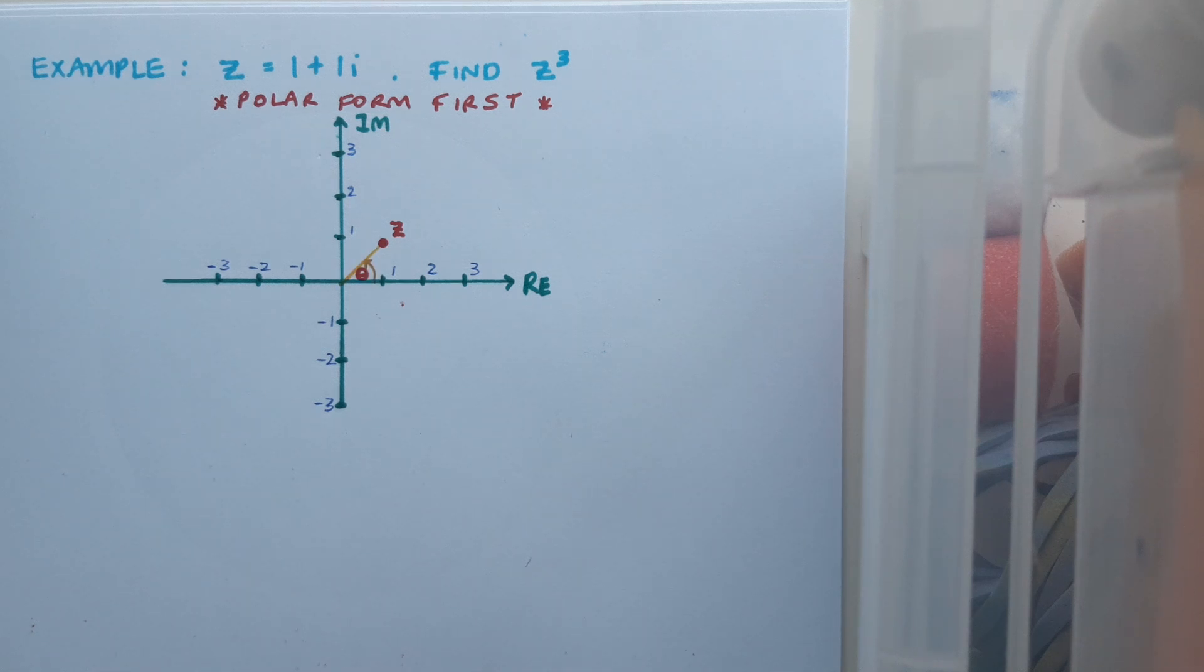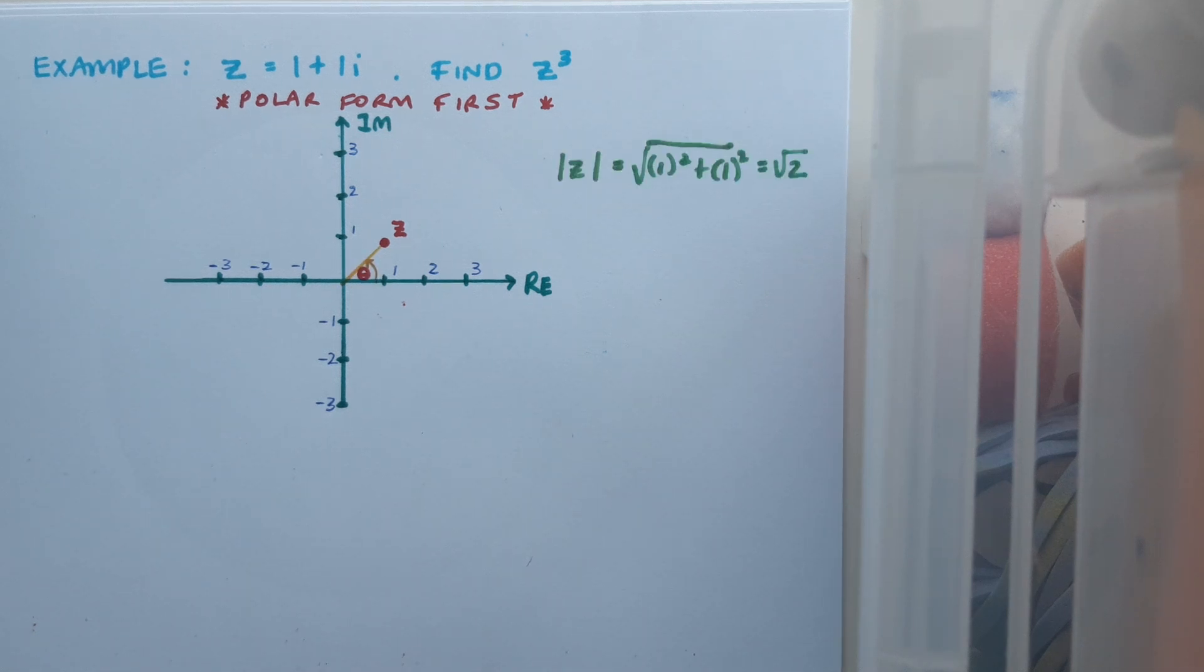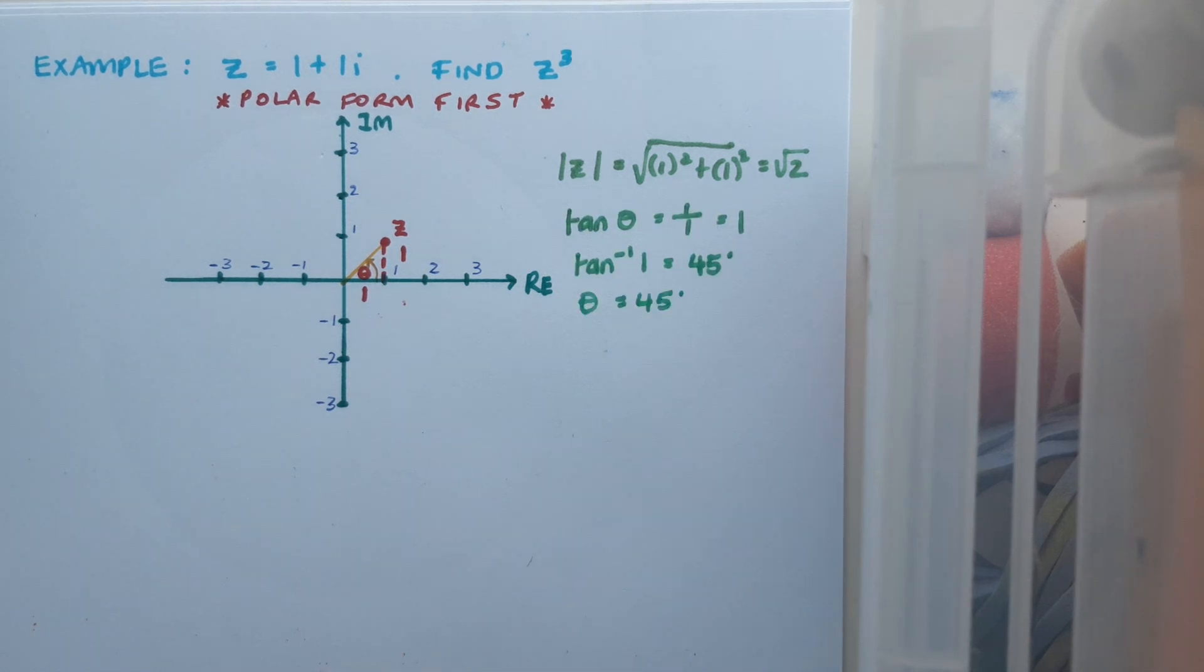So I want to calculate the modulus first. In this case, the modulus of z comes out as root 2. And then as usual, I'm going to drop my line from z down to the real axis and create my right-angled triangle to find the argument. This triangle has sides of 1 and 1. I can use tan θ to work out its angle. So tan θ is 1, and tan inverse of 1 is 45. So θ is 45. So z in this case, in polar form, is root 2(cos 45 + i sin 45).